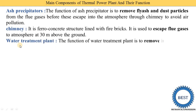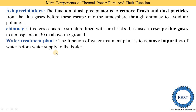Another component is the water treatment plant. Its function is to remove impurities from the water before it is supplied to the boiler. If impurities are not removed, the water creates a number of problems for the boiler — that is why a water treatment plant is required.